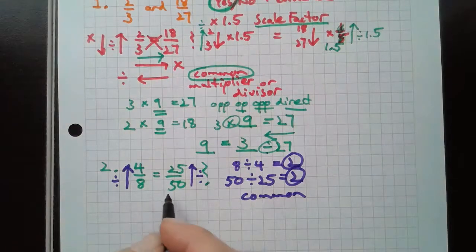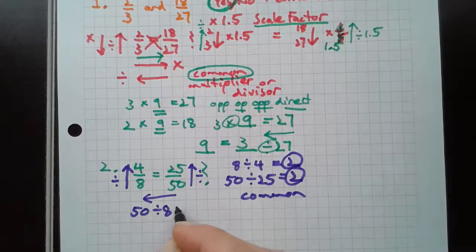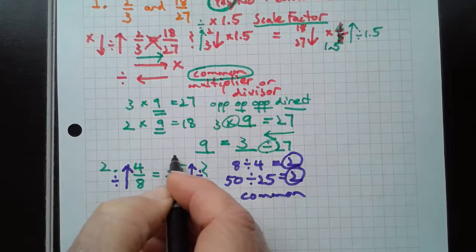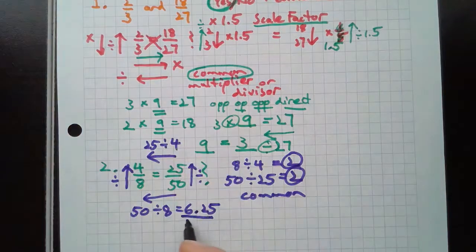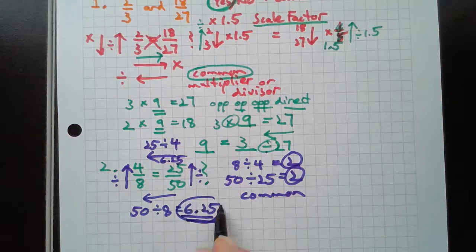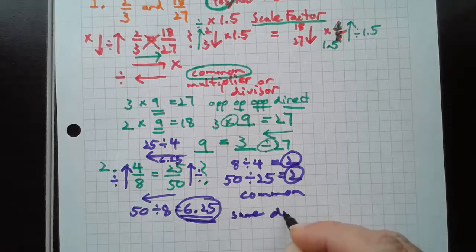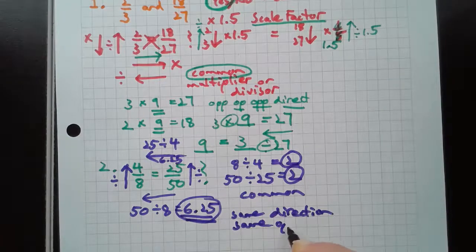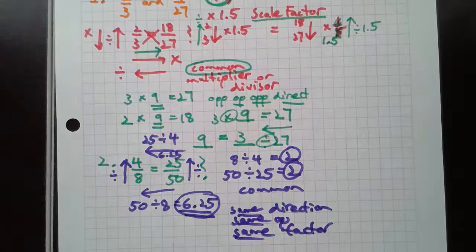What happens if I go this way and I say what's 50 divided by 8? 6 and 1/4. So if I go this way and ask what's 25 divided by 4, I better still get 6 and 1/4. And I do. So even though it's a different number, when I go same direction, same operation, I should get the same factor.